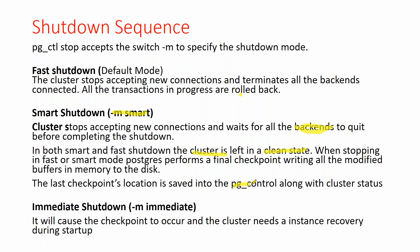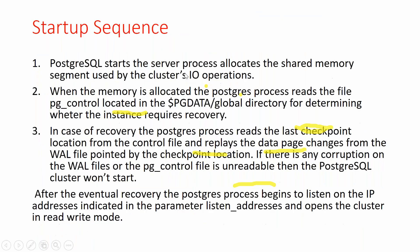When stopping with fast or smart, Postgres performs a final checkpoint, writing all modified buffers from memory to disk. All these changes are also saved in the pg_control file. Start and stop are both at the OS level only — you have to use pgctl to stop and start.